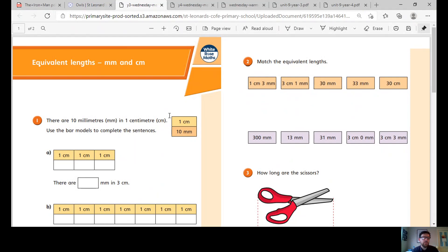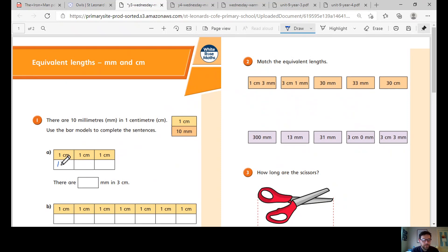This time we are looking at equivalent lengths, but this time we're looking at millimetres and centimetres, so our work from our previous lessons is really going to help us here. There are 10 millimetres in one centimetre using our bar model here. Similar to yesterday, so how many millimetres are in one centimetre? We know it's 10.